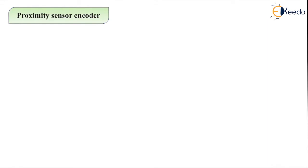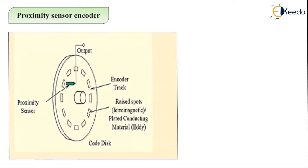Now, the next method for the generation of the signal is the proximity sensor encoder. What do you mean by proximity sensor encoder? This is the simple circuit diagram for the proximity sensor encoder. The green colour shows the proximity sensor, which gives you the output. These are the encoder shaft and these are the raised spots or ferromagnetic core. These are plated conducting material, that is the eddy current. The magnetic induction probe or the eddy current can be used for the magnetic induction — that is, ferromagnetic core or the eddy current can be used for the magnetic induction.